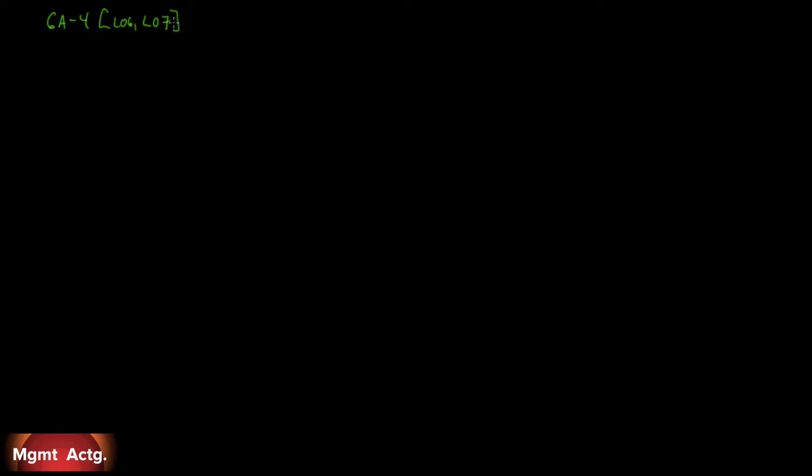Problem 6A4 is a more comprehensive question covering learning objectives 6 and 7: equivalent units and cost per equivalent unit. We're referring to the data for Health Check Core in exercise 6.6 — page 231 for those with a book. Assume the company uses the FIFO method. Number 1: compute the equivalent units for June's activity for the first processing department. This is part 1 of the production schedule — a quantity schedule and equivalent units.